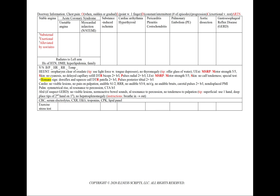For stable angina, the classic presentation is chest pain that is substernal, exertional, and alleviated by rest or nitro. It will radiate to the left arm and can have a history of hypertension, diabetes, hyperlipidemia, or family history. We'll add an exercise stress test.